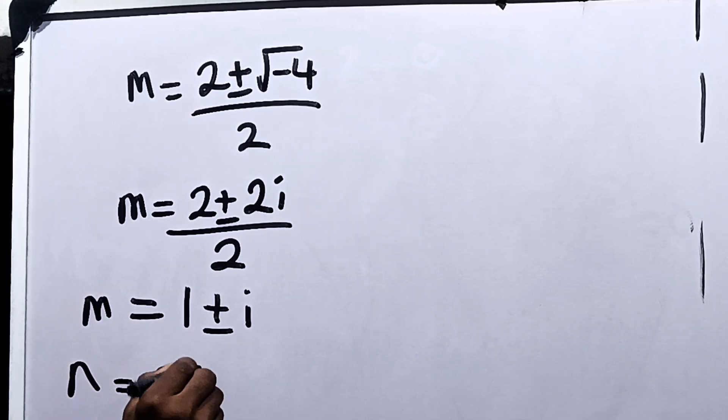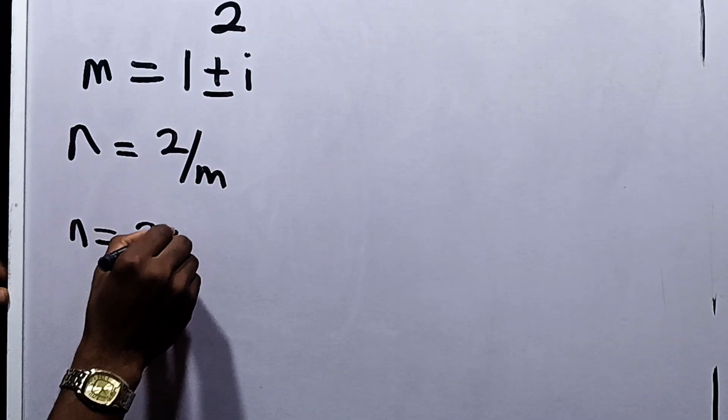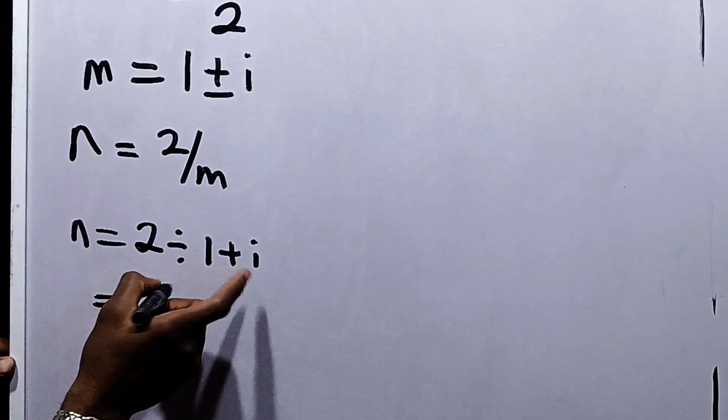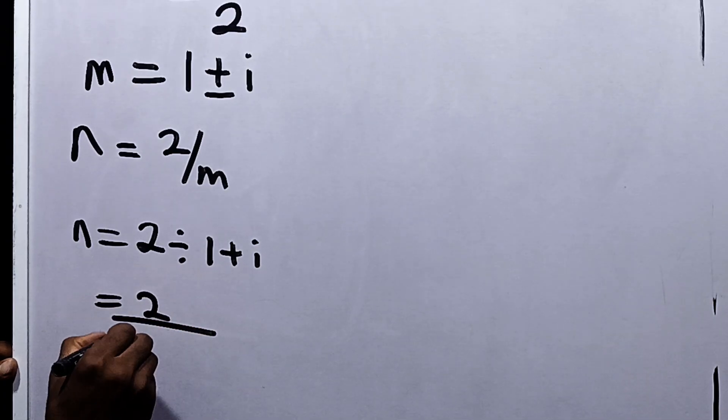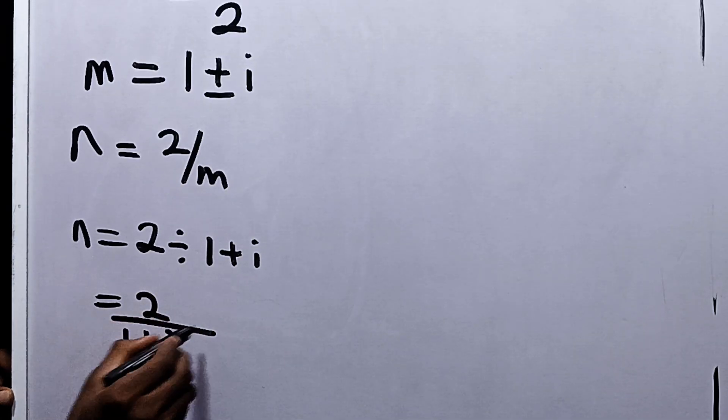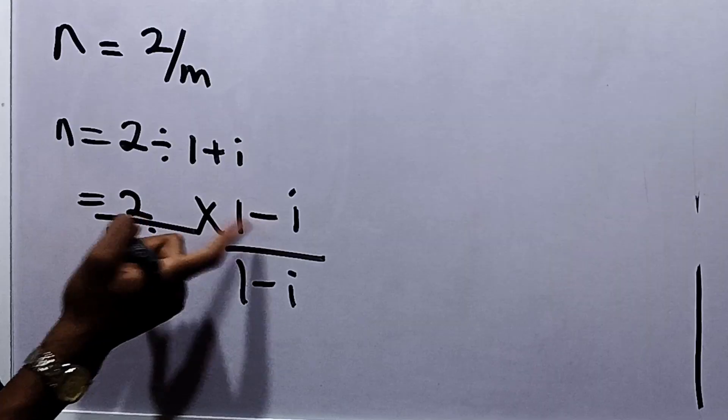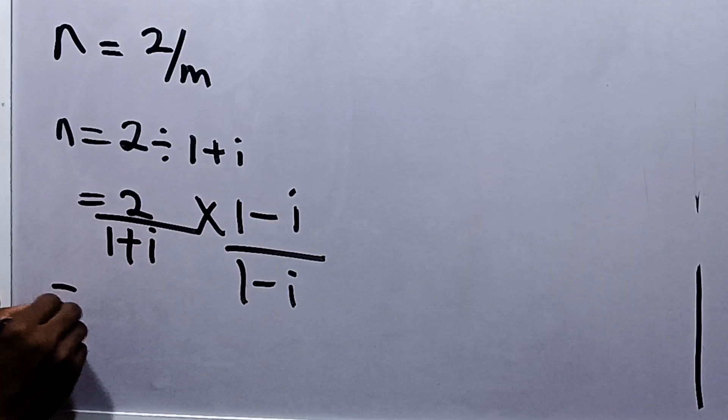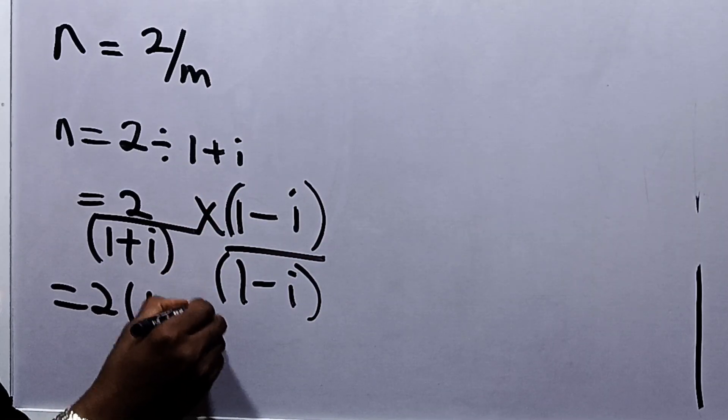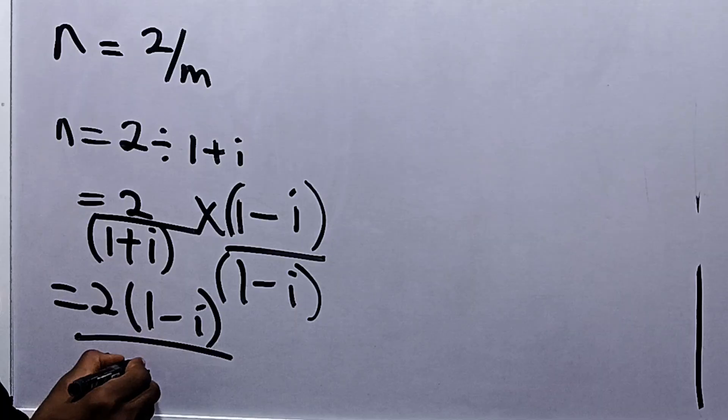But we recall that we say n is equal to 2 over m. So we have that when m is 1 plus i, our n is now equal to 2 divided by 1 plus i. Now, let's rationalize this denominator by multiplying both the numerator and the denominator by the conjugate of the denominator. So we have this to be equal to 2 times 1 minus i divided by 1 squared is 1, minus i squared is minus 1. So this is 1 plus 1.